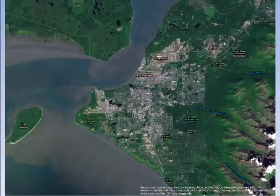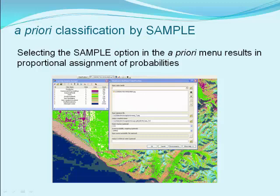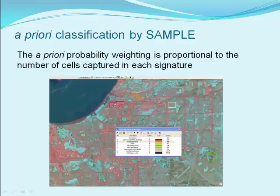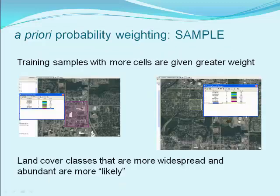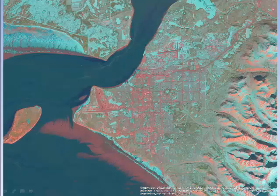We will now fly 400 miles east to the city of Anchorage to evaluate another approach. In this approach we will use a proportional weighting method known as sample. The number of cells captured in the training sample will determine the weighting for each class — larger training samples receive higher weightings. If a commercial office class has twice as many cells in its training sample, its weighting will be twice as high. We will use this method to evaluate cover classes around the city of Anchorage.